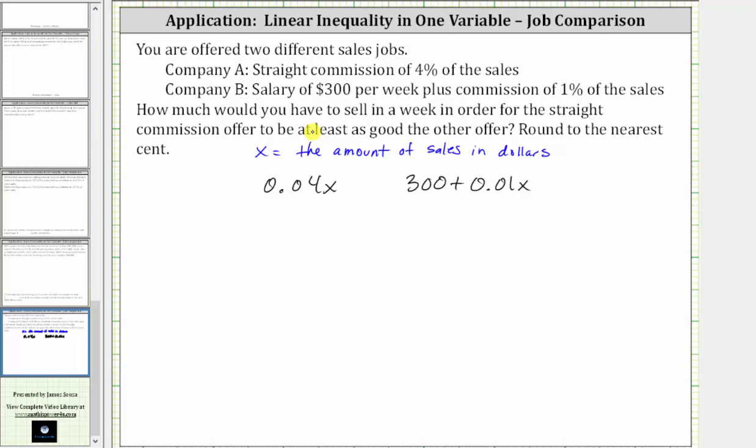And now, because the question is how much would you have to sell in a week in order for the straight commission offer to be at least as good as the other offer, we want to know when 0.04x is greater than or equal to 300 plus 0.01x.